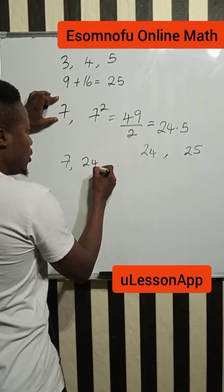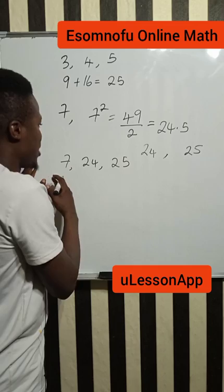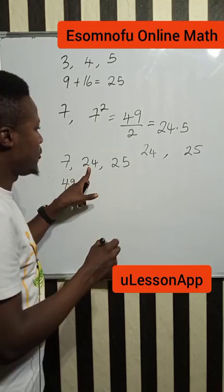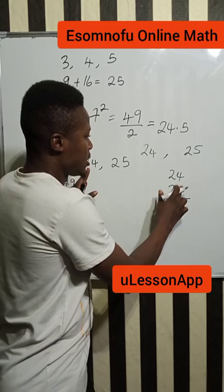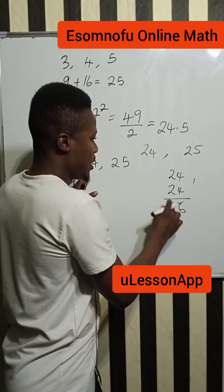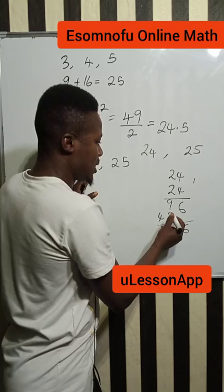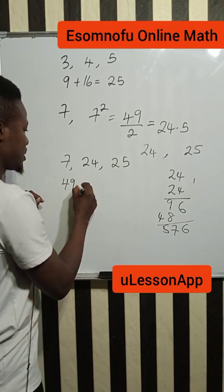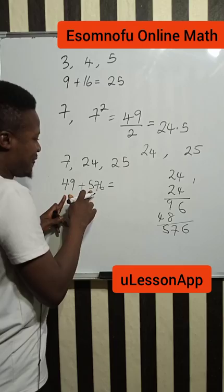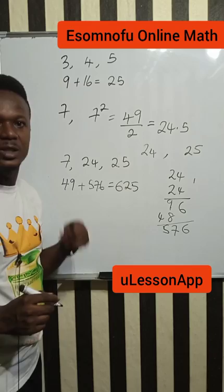You can verify it. You will see that this is a Pythagorean triple because if you square seven, it will give you 49. Now 24 squared means 24 multiplied by 24. 4 times 4 is 16, write 6 carry 1. 4 times 2 is 8 plus 1 is 9. 2 times 4 is 8. 2 times 2 is 4. When you add, you have 6, then 9 plus 8 is 17, add 1 to 4 is 5. So 24 squared is 576. And 49 plus 576 gives us 625. And 25 squared is also 625.